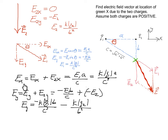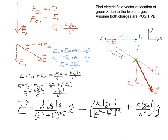So we have the x and y components of the net electric field, and now we can write the electric field vector. The net x component goes in front of the i-hat, and the net y component goes in front of the j-hat. I've substituted c = √(a² + b²) into the expressions. This is the net electric field vector at the location of the green x due to charges 1 and 2.